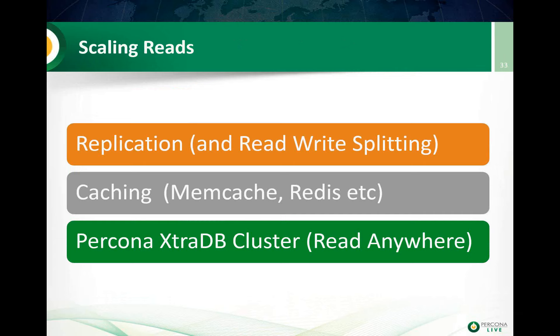Scaling reads can often be done by replication with read-write splitting — you can set up several slaves and route reads to them, scaling read capacity multiple times. You can implement caching with Memcache, Redis, or even HTTP-level cache like Varnish, drastically reducing reads MySQL has to deal with. Or you can set up a solution like Percona XtraDB Cluster, because you can read from any node without worrying about replication lag if you set it up properly.